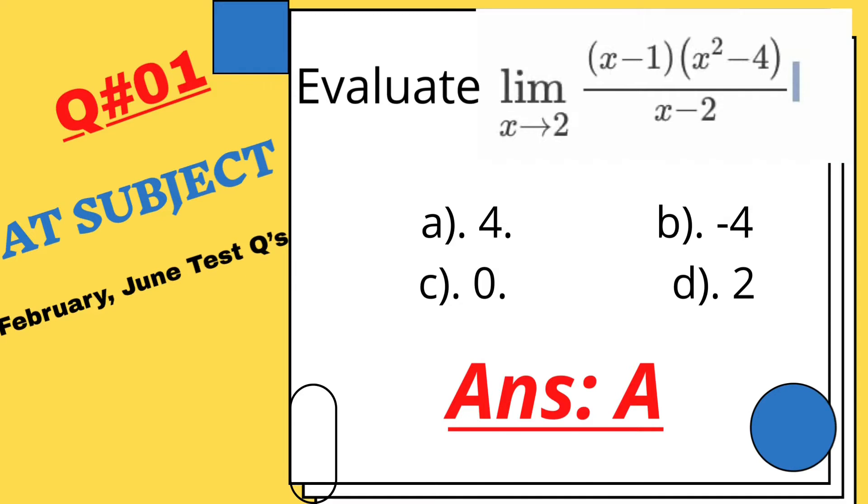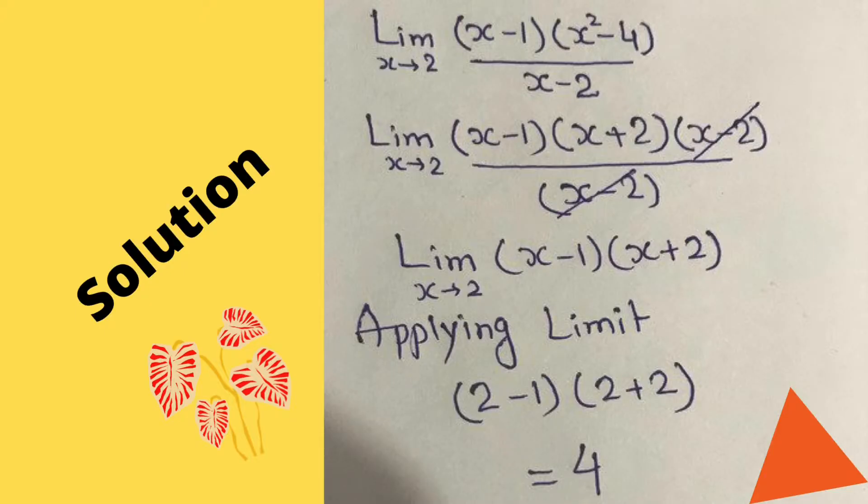The correct answer is 4. Now we check the solution. You can see the limit as x approaches 2. We evaluate the expression x²-4, and we know that it equals (x+2)(x-2). After that, we apply the limit and get the answer by substituting the value.